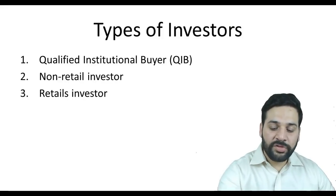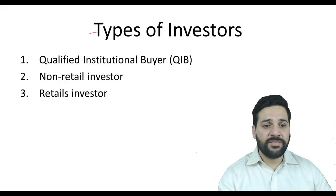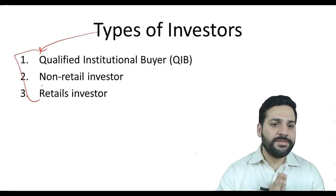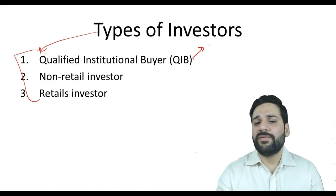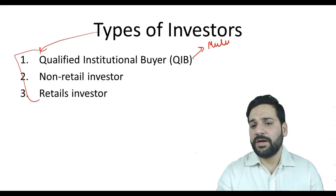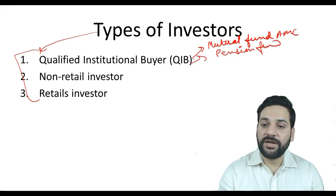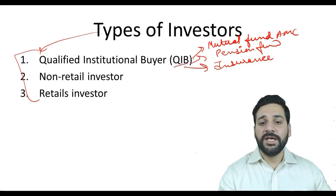First and most importantly, what are the various types of investors? There are three types of investors in case of an IPO: the Qualified Institutional Buyers or QIBs, the non-retail investors, and the retail investors. QIBs include mutual fund AMCs, pension funds, and insurance companies — all big institutional investors.